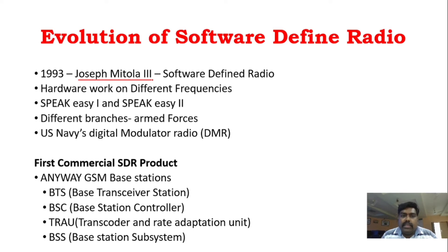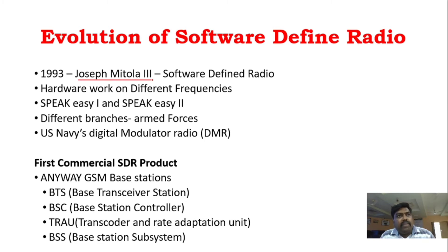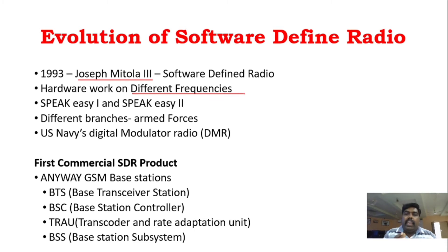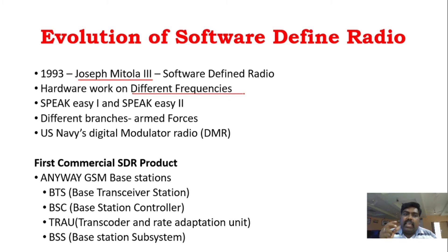Instead of having different hardware for different software programs, each hardware can be made to work for different frequencies — for example, Bluetooth, Wi-Fi, and other different frequency configurations. You update the software defined radio when you need to use hardware at different frequencies. This is the first evolution of software defined radio.